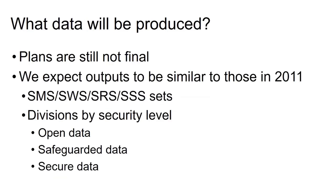Plans for what data will be produced are still not final. It's possible that ONS and the other census agencies will develop API and flexible table builders for flow data, but we don't know that yet. We expect outputs very similar to those produced in 2011 — four sets: migration, workplace, second residence, and students — divided by security level. Open data will be the easiest to access. Safeguarded data is accessible by UK academics and people in public sector roles. The most detailed secure data requires you to be an accredited researcher with an approved project.